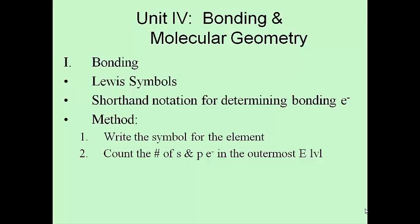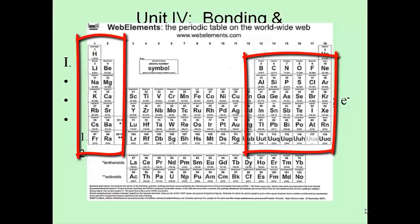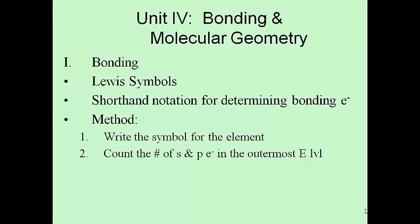Now you have to think back for a second. Count the number of S and P electrons in the outermost energy level. LVL is level, by the way. You have to go back to atomic theory. Remember when we did electron configurations? There were four sections of the periodic table. The first two columns are your S orbitals. Your last six columns are your P orbitals. Those are the only ones we care about in this section. It doesn't matter about the Ds, doesn't matter about the Fs. So we're only looking at the S and P electrons.